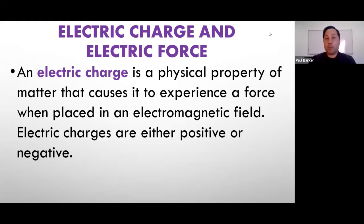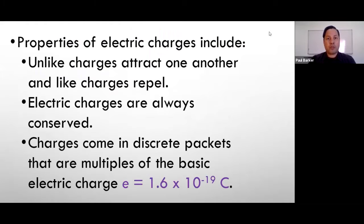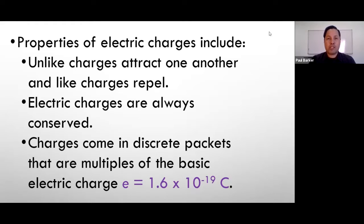Electric charges are either positive or negative. Properties of electric charges include: unlike charges attract one another — for example, a positive and a negative will have an attractive force — but like charges repel each other. For example, either a positive and a positive or a negative and a negative will repel each other. Electric charges are always conserved; if they do not dissipate, they are always conserved.